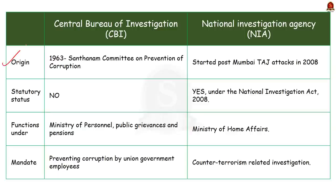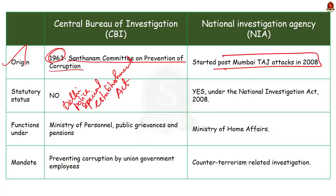So let's start our discussion with the origin of these institutions. Central Bureau of Investigation that is CBI was established in the year 1963. It was established according to the recommendation of Santanam committee on prevention of corruption. Here note that the CBI is not a statutory body. But it derives some of its power from the Delhi Police Special Establishment Act in 1946. Now coming to National Investigation Agency that is NIA. It was established in the year 2008 after the Mumbai Taj terror attacks. NIA is a statutory body which derives its power from the National Investigation Agency Act 2008.